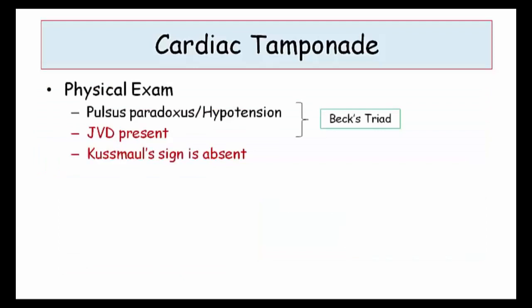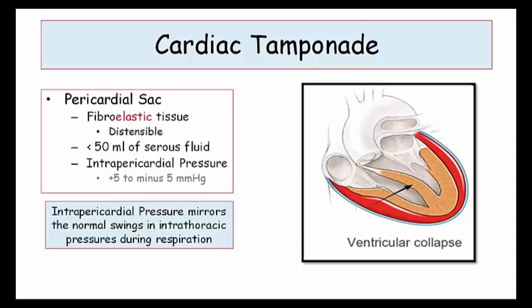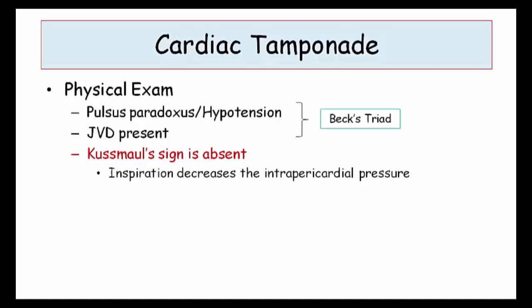Here is a summary of the physical exam findings. We already discussed pulsus and the associated hypotension due to decreased stroke volume. JVD will be present. I emphasize that point so you don't get confused by the absence of Kussmaul's sign. The decrease in intrapericardial pressure with inspiration permits an increase in right-sided chamber filling, thereby explaining the absence of Kussmaul's — there is no paradoxical rise in the jugular venous pressure with inspiration. The increased right-sided filling occurs at the expense of the left-sided cavities. This becomes a key distinction from constrictive pericarditis.